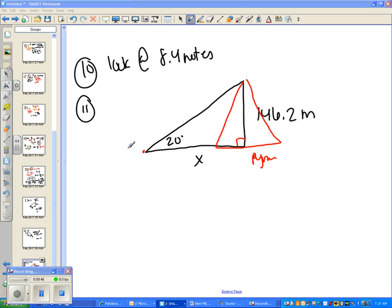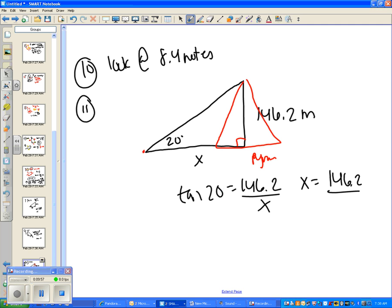You're going to have to use tangent because we have opposite and adjacent. So tan of 20 equals 146.2 over x. When x is on the bottom, all you do is swap them. So 146.2 divided by tan 20, you can put that in your calculator. You should have gotten 402 meters.